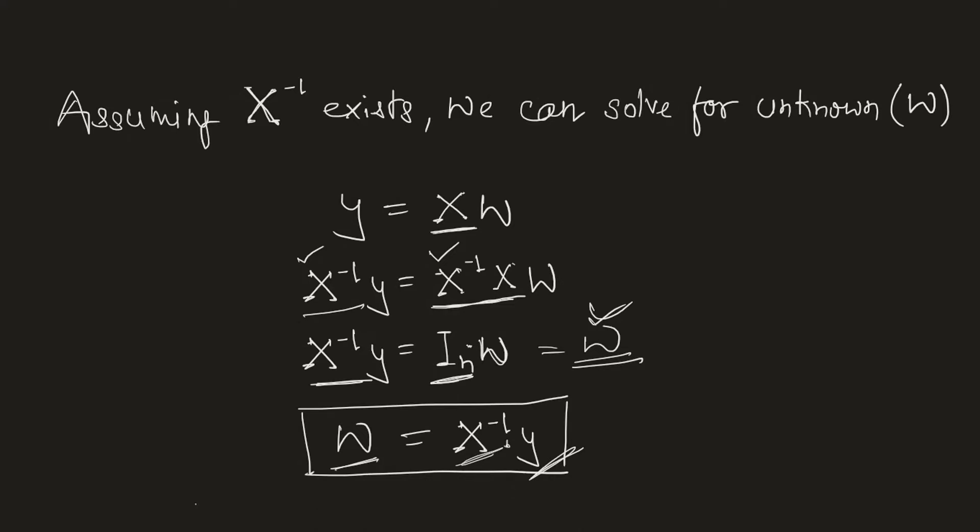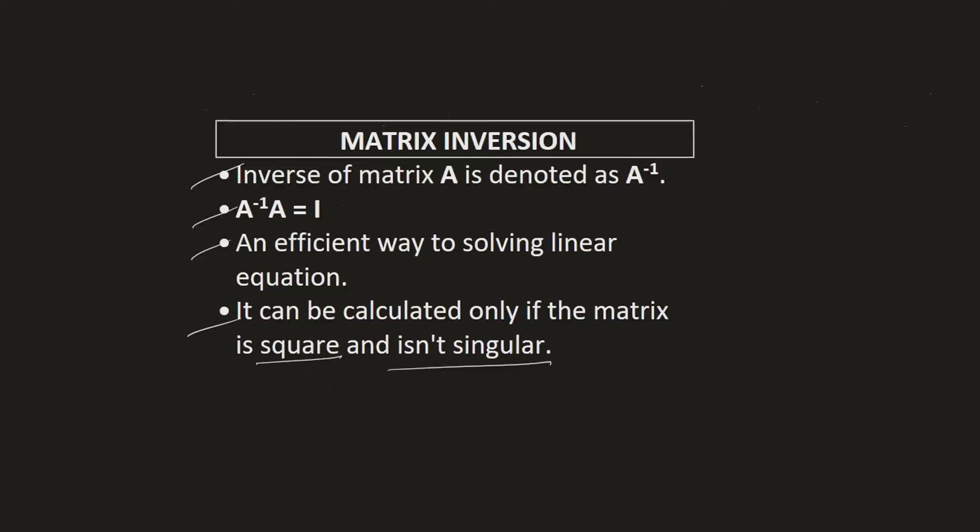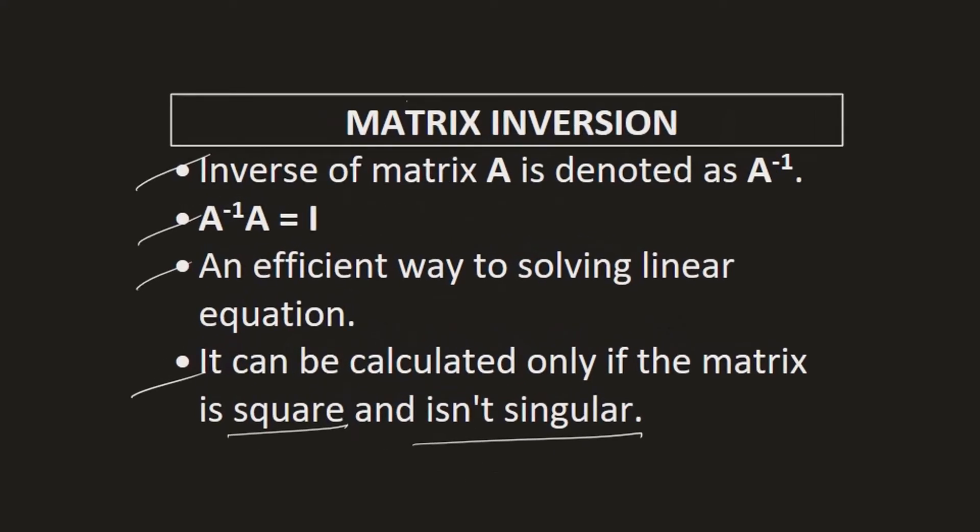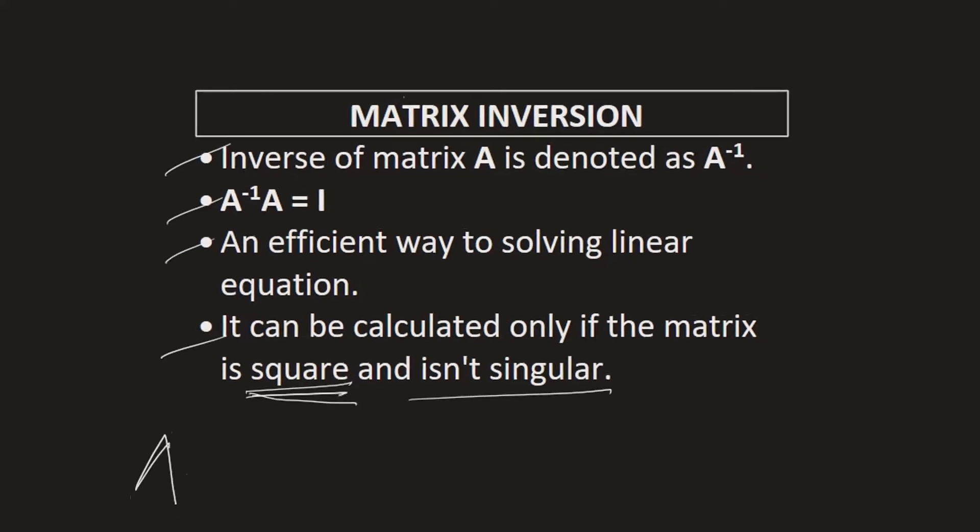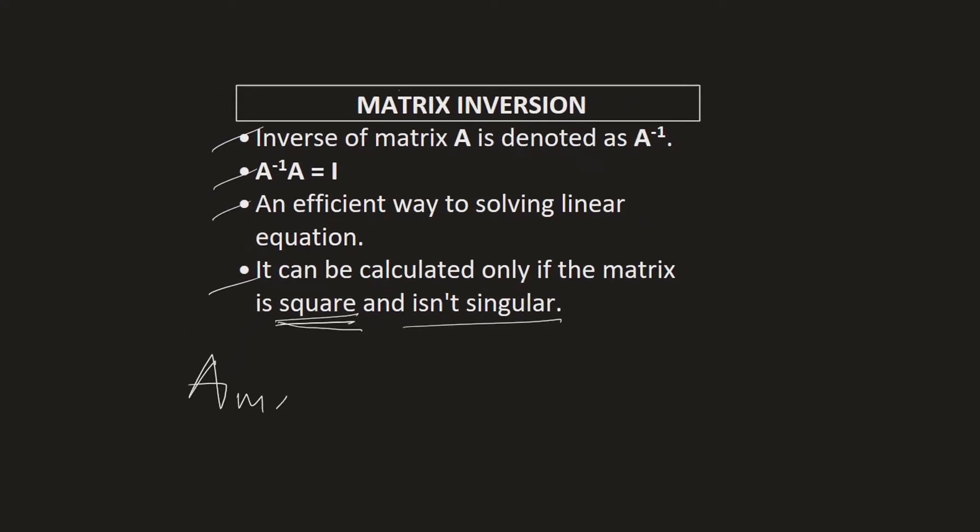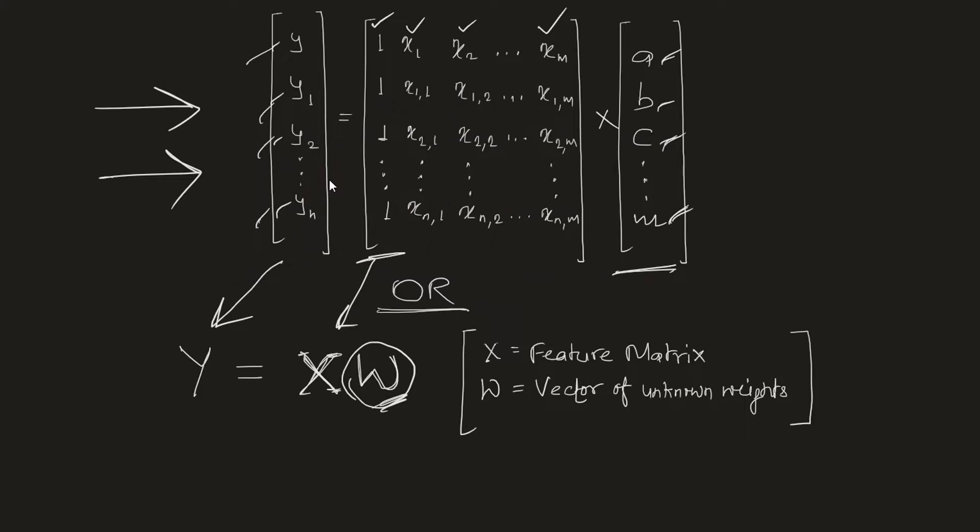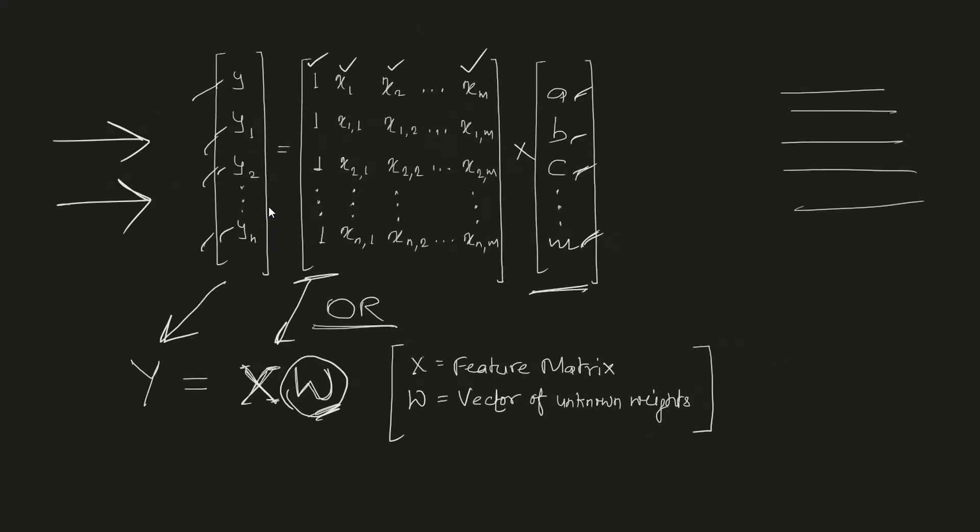I want you to focus here where we studied that the inverse of a matrix can be calculated only if the matrix is a square matrix which means the number of rows should be equals to the number of columns. However that's not quite practical in the field of machine learning because in most of the projects where you will be working you will see that there will be thousands and thousands of records which means the number of rows will be too much. However the number of features will be limited.